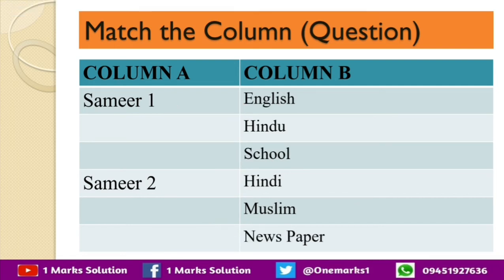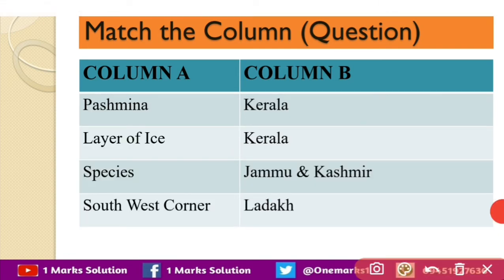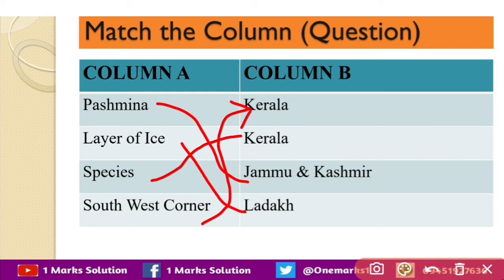Next, we have to match Column A with Column B. Pashmina is related to Jammu and Kashmir. Layer of ice is related to Ladakh. Spices are related to Kerala. And southwest corner is also related to Kerala — meaning Kerala is situated in the southwest corner.